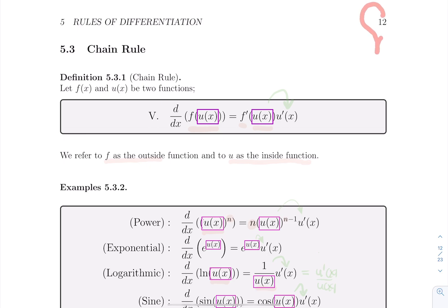Welcome to the Chain Rule section. Here we'll learn how to compute derivatives of functions created through composition — what happens if you have a function inside a function. The chain rule is not like the product rule or quotient rule with a nice formula you just label and apply. The general chain rule formula is not very user-friendly. If we have f of u of x, we call f the outside function and u the inside function.